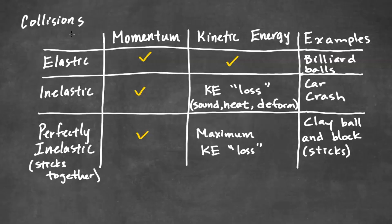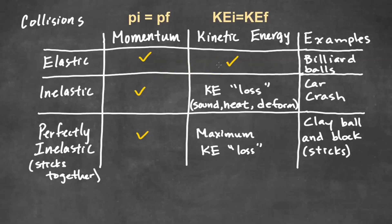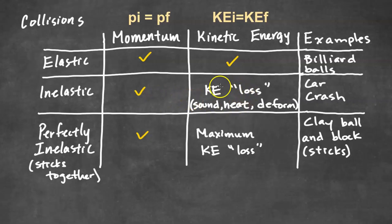Conservation of momentum is very helpful in collisions, especially when there are no net external forces. We'll look at different types of collisions. In an elastic collision, two objects collide and the total initial momentum equals the total final momentum. The total initial kinetic energy is also equal to the final kinetic energy. An example would be billiard balls, although in real life there is some energy loss converted to heat. In an inelastic collision, momentum is also conserved, but there is some kinetic energy loss — energy may be transferred to sound or heat, or may have deformed the objects. An example is a car crash.